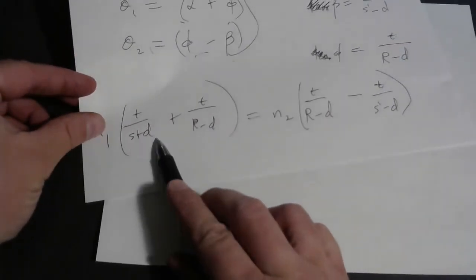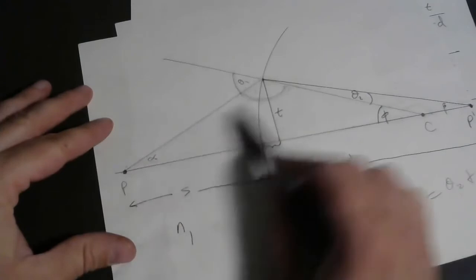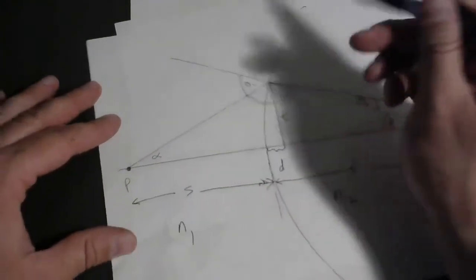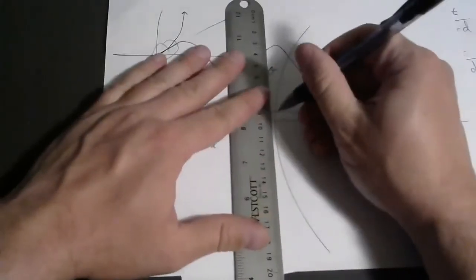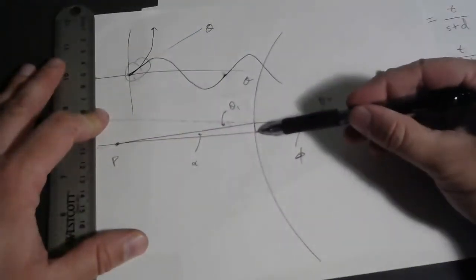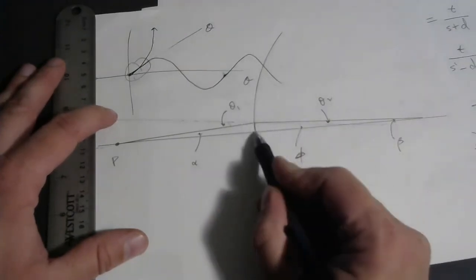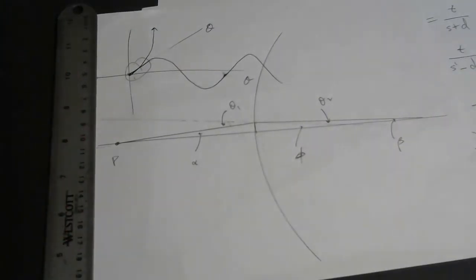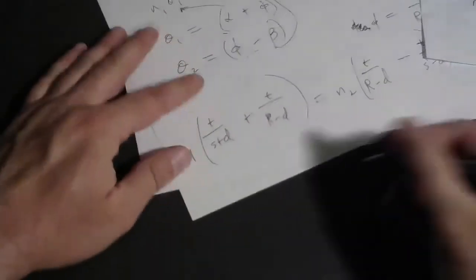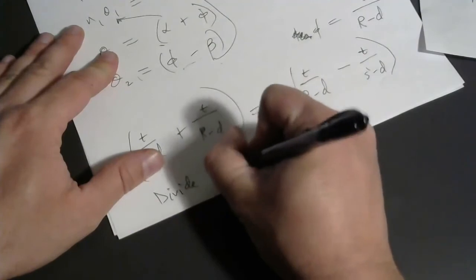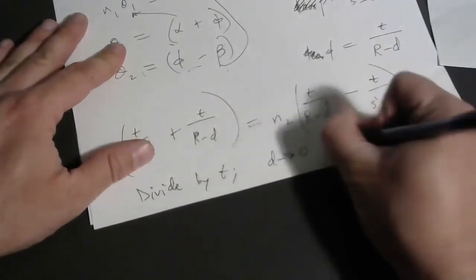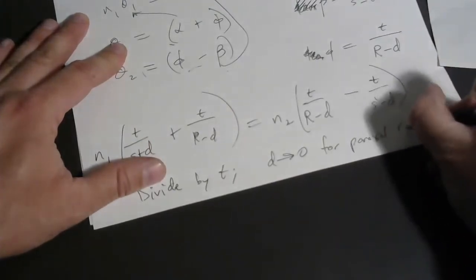But we'd also like to get rid of d. Remember that comment I made a few minutes ago? How for a truly paraxial ray, this quantity d becomes very small. T doesn't necessarily become too small, but d would be very small. Can we see that on this diagram? Yeah. In fact, t would be this distance, not zero. I mean, it's small, smaller than it was before, but it's not zero. D is this tiny little distance here. For a truly paraxial ray, d is practically zero. So I will say divide by t and then d goes to zero for a paraxial ray.